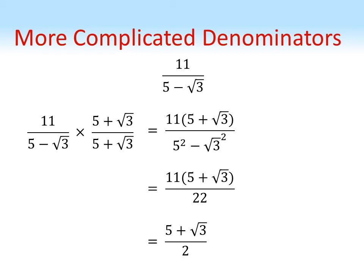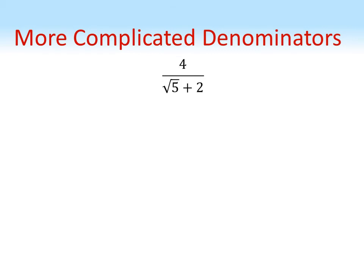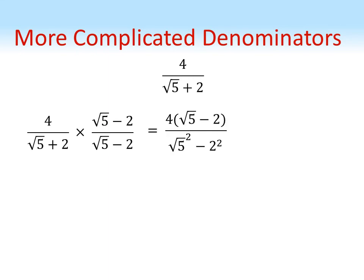Let's try that method again. So our new fraction is four over root five plus two. So again we've got the same issue on the bottom of the fraction - we've got a root and a whole number added together, so we need to use our conjugate. This is root five plus two, so our conjugate is root five minus two, and we're going to times top and bottom by this. So on the top we've got four lots of root five minus two. On the bottom we've got the square of root five minus the square of two, so five minus four is one, giving us an answer of four lots of root five minus two.